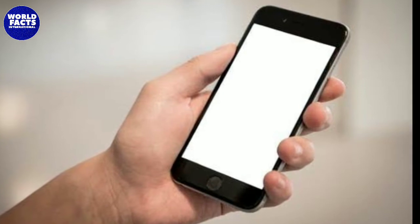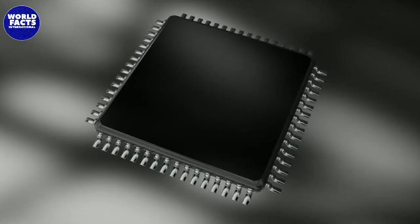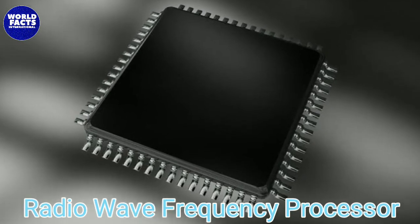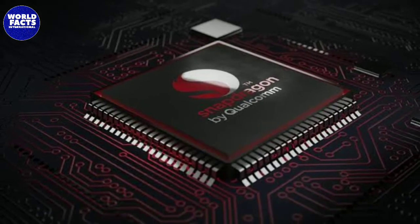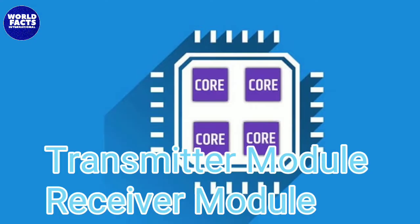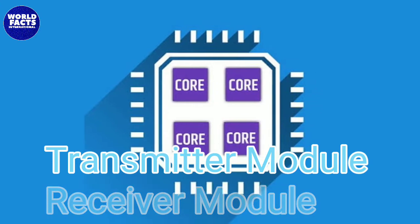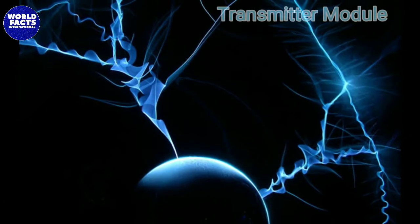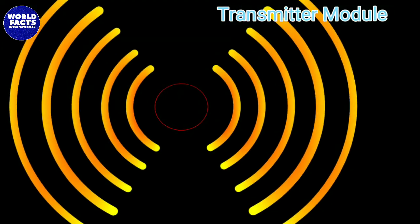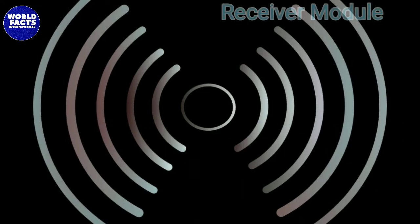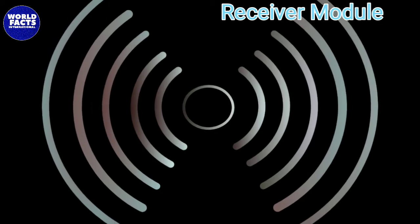The part of the mobile that does this is the RF processor — it stands for Radio Frequency processor. This processor has two modules: one is the transmitter module and the other is the receiver module. The transmitter module converts electric signals into radio waves, whereas the receiver module converts radio waves into electric signals.